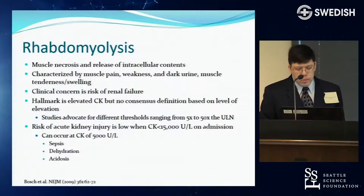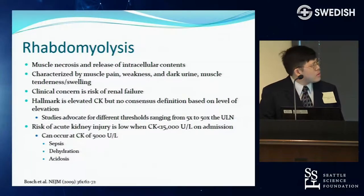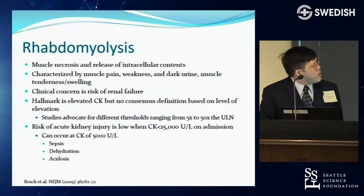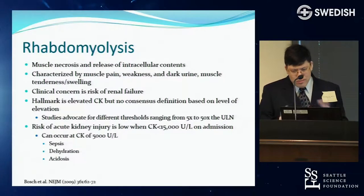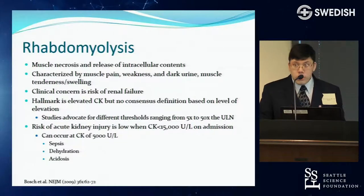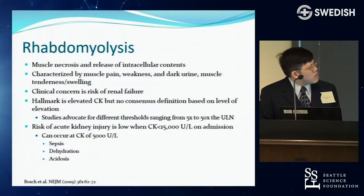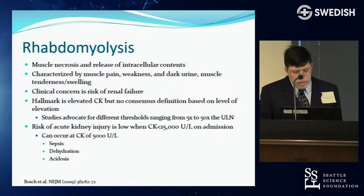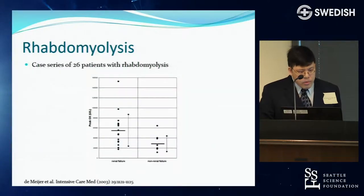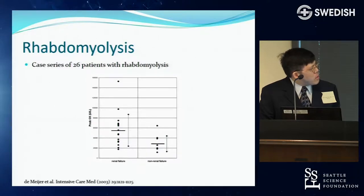A quick note on rhabdomyolysis — thought to result from large amounts of muscle necrosis. The main concern is renal failure, but there's no agreed-upon CK level that definitively signals renal risk. Studies found that the risk for acute kidney injury is actually low if CK is under 15,000 — a fairly high level. However, with comorbidities like sepsis or dehydration, injury can occur at lower levels. In one patient series, all those who developed renal failure were above the 15,000 threshold.